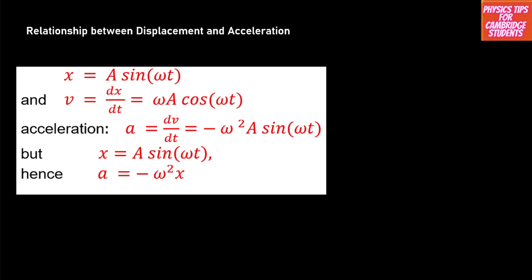So simple harmonic motion — the relationship between displacement and acceleration. The displacement X is equal to A sine omega T, where X is our displacement, A is the maximum displacement called the amplitude, the maximum displacement from the undisturbed position. Omega is angular frequency, as this syllabus wants you to say.